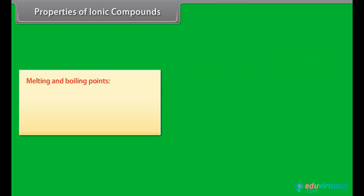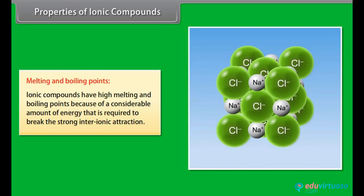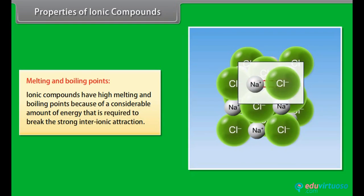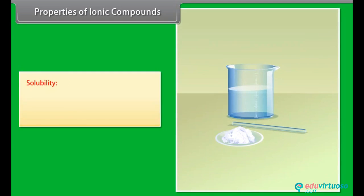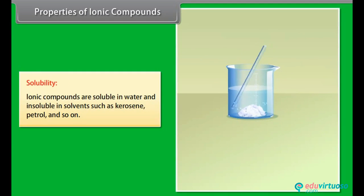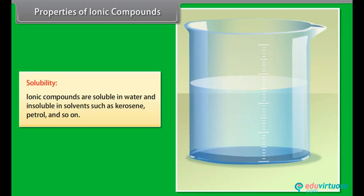Melting and Boiling Points: Ionic compounds have high melting and boiling points because of a considerable amount of energy that is required to break this strong inter-ionic attraction. Solubility: Ionic compounds are soluble in water and insoluble in solvents such as kerosene, petrol and so on.